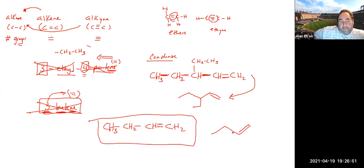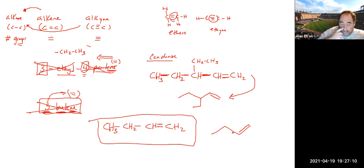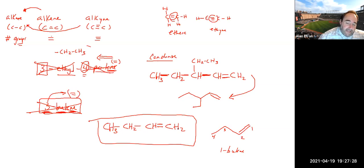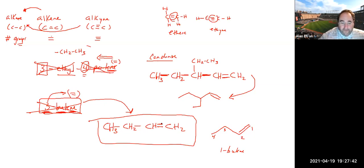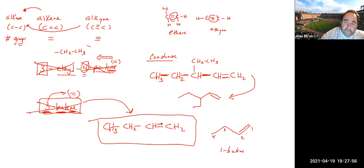You might notice that if you took '3-butene' and drew it, then tried to name it from the structure, you'd actually call it '1-butene' — because you should number from the end closest to the double bond. This sometimes happens going from name to formula: you end up with a structure that, if you were starting from scratch, would get a slightly different name. Since they gave you the name, you just draw it as written.